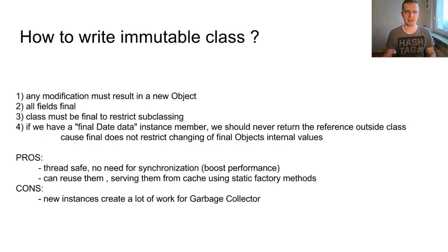How to write immutable class? Any modification must result in a new object. So you would normally create a copy method which will create a new instance of the class. All fields should be final to not allow changing the values of the fields. The class must be final to restrict, to not allow subclassing.